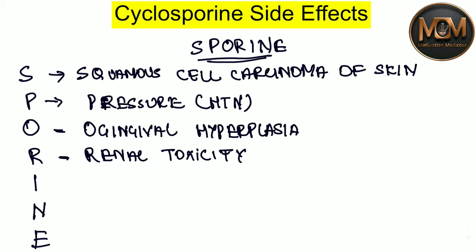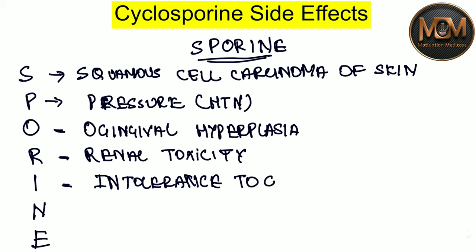From the I, we have intolerance to glucose. And from the N, that is neurotoxicity.